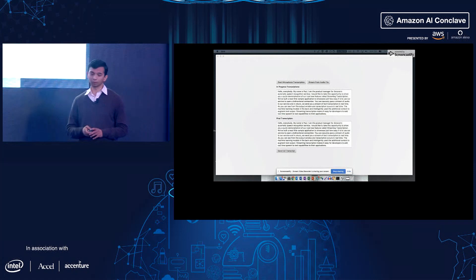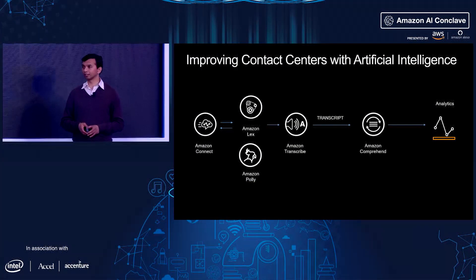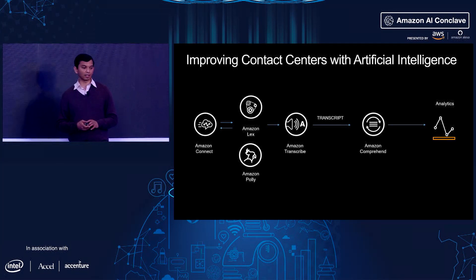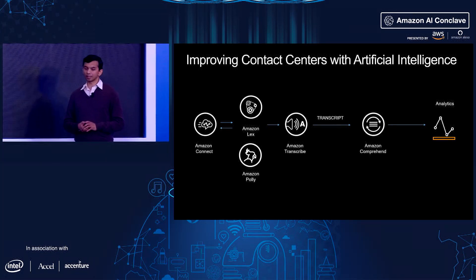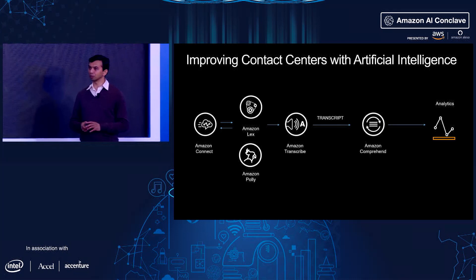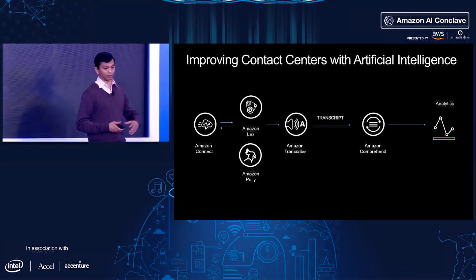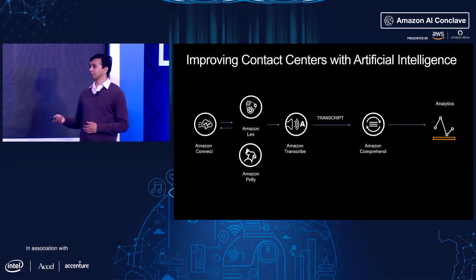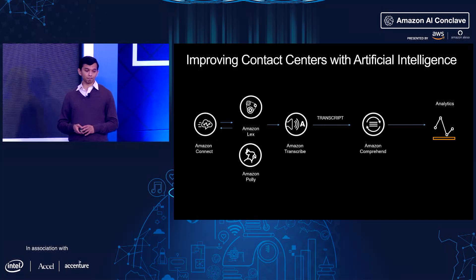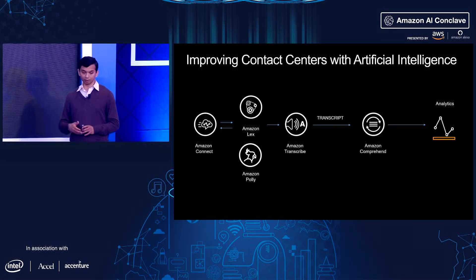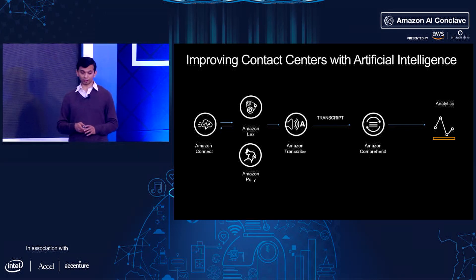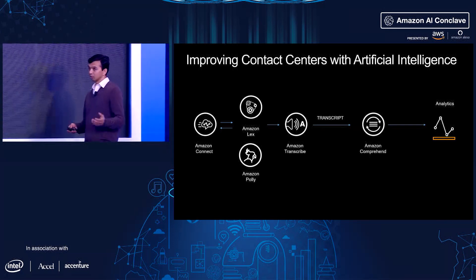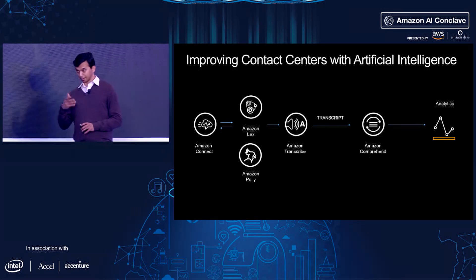Here's a schematic diagram of how you'd use Transcribe, Comprehend, and other tools for contact center analytics. Your call comes into Amazon Connect, data gets stored in S3. First, Amazon Lex handles the IVR. When Lex can't solve it, it passes to a human — that call recording goes to S3, then to Transcribe. The transcript is then run through Comprehend, and finally you can use tools like Tableau or QuickSight for running your analytics.